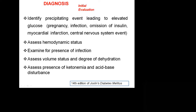For diagnosis, the most important is clinical. The patient is diabetic, in stress, tachypneic, in shock, in tachycardia — most probably the patient is in DKA. Look at the precipitating events: pregnancy, infection, omission of insulin, myocardial infarction, CNS problems. Assess hemodynamic status — look at pulse, respiration, and blood pressure. Examine for the presence of infection; if an infection focus is there and you don't remove that focus, the patient will not come out of DKA. If a limb has a problem, do debridement; if there is gangrene, do amputation.